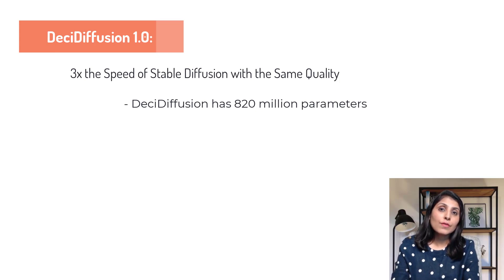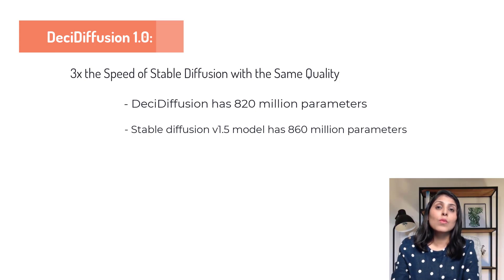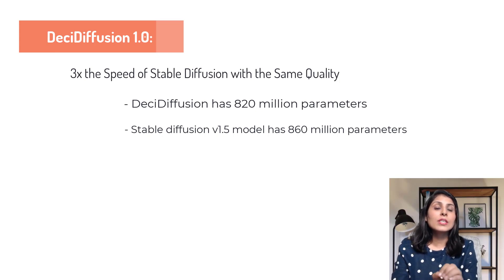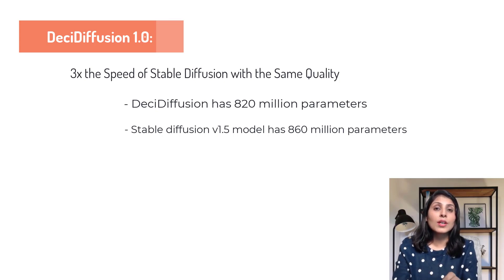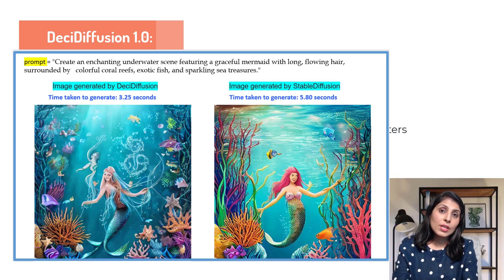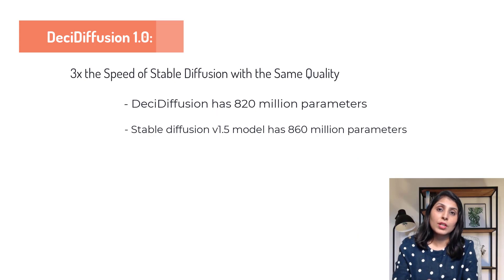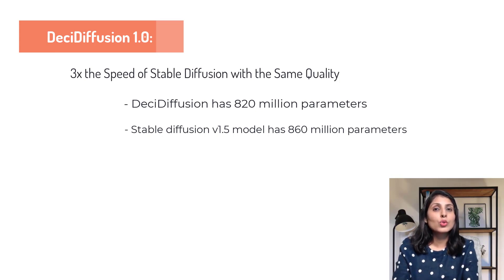If you compare this Desi Diffusion model with Stable Diffusion version 1.5, Desi Diffusion has 820 million parameters while Stable Diffusion has 860 million parameters. But still Desi Diffusion performs just as well as Stable Diffusion 1.5, and it also takes 40% less time. In today's video I will show you how to use this Desi Diffusion model on Hugging Face, and also how to run it on your local machines.